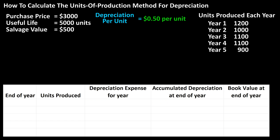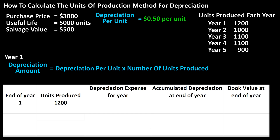Here are the units produced over the five years of useful life of the asset. At the end of year one, the equipment produced 1,200 units. So we put a 1 in the end of year column and 1,200 in the units produced column. The depreciation expense for year one equals the depreciation per unit times the number of units produced — $0.50 times 1,200 units produced.